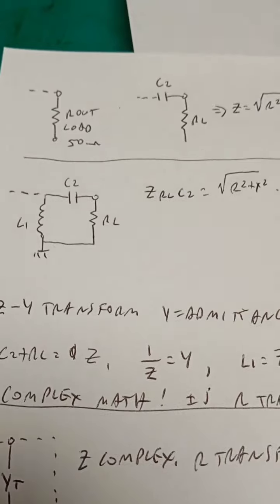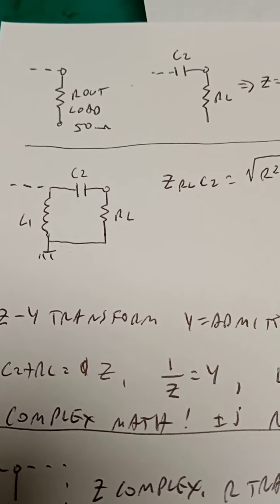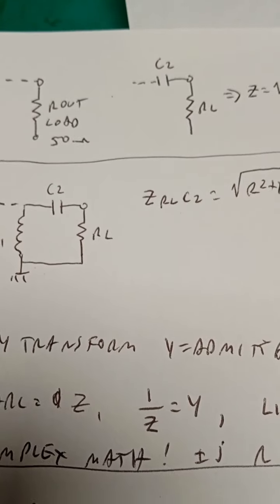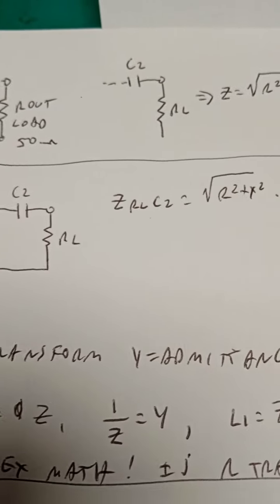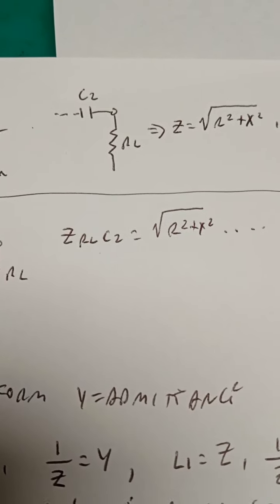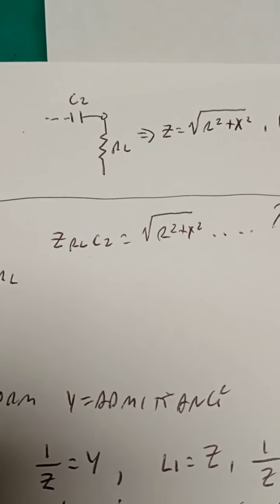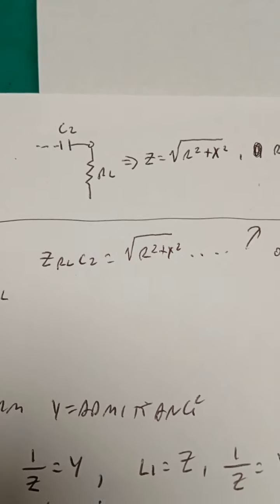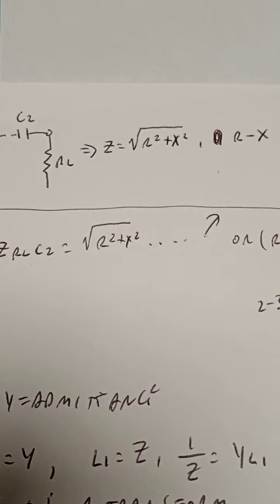As before with tuned circuits, there's an output load, 50 ohms, antenna, dummy load, whatever. In series with it is a capacitor. At no time is that resonant. The capacitor increases the impedance, guaranteed. Those two components can be equated to an impedance.